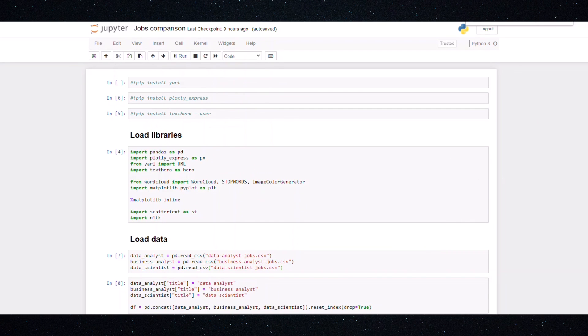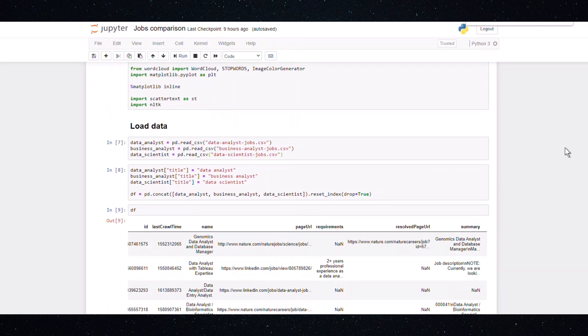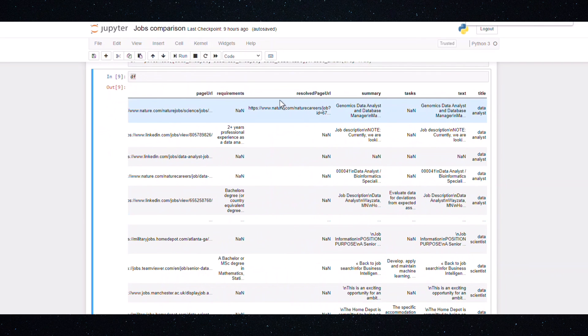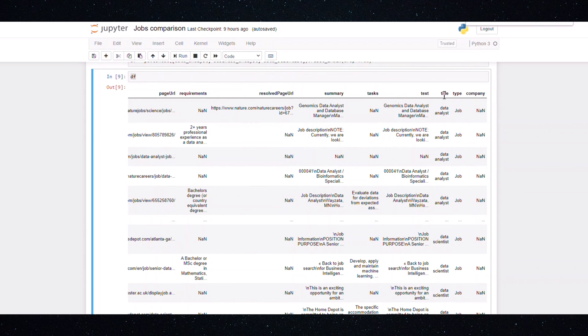So I already downloaded the data and I already created a Jupyter notebook for pre-processing and analyzing these job post datasets. You can see now that messy data in different websites are organized into name, page URL, requirements, summary, tasks, text, and title. That is really cool.